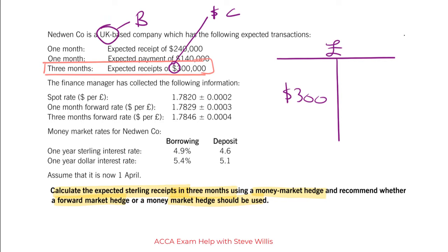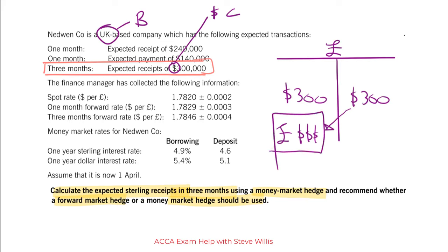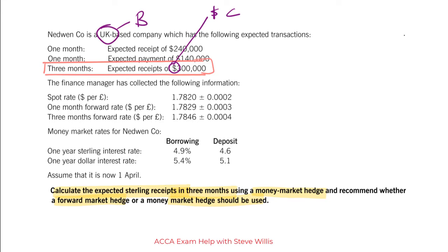We are expecting $300,000 in the future. I will then borrow $300,000 from the bank, convert it at the spot rate, and put it on deposit where it is earning interest. In exactly three months, I would withdraw this money and the receipts would pay off the loan. Now let's deal with the exchange rate that we need to use — we will need to convert the money that we borrow at the spot rate.